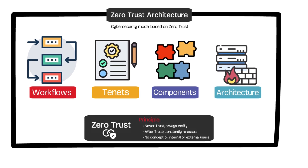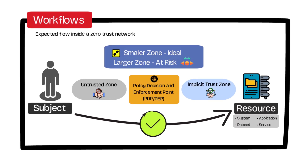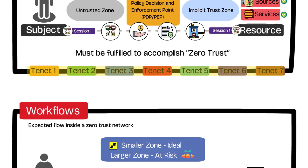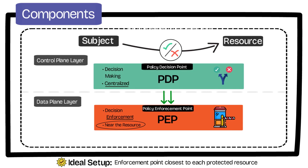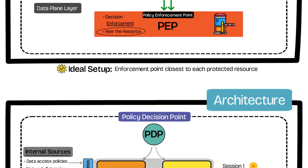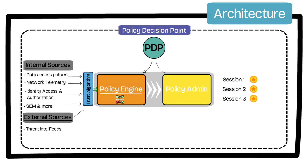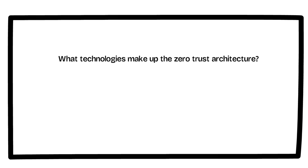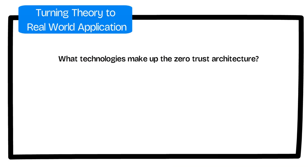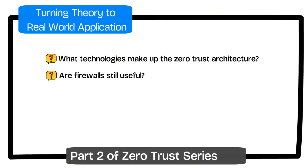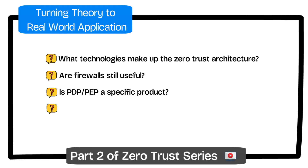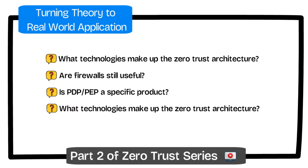NIST 800-207 is intentionally abstract regarding the specific technologies that make up the various components in this design. There are multiple approaches an enterprise could take when implementing a zero trust architecture, with certain approaches better suited for specific use cases than others. In part two of the zero trust architecture series, we'll examine how these approaches impact the technology selected, and see what technologies are behind the components we just reviewed and how they come together to offer a zero trust architecture model.